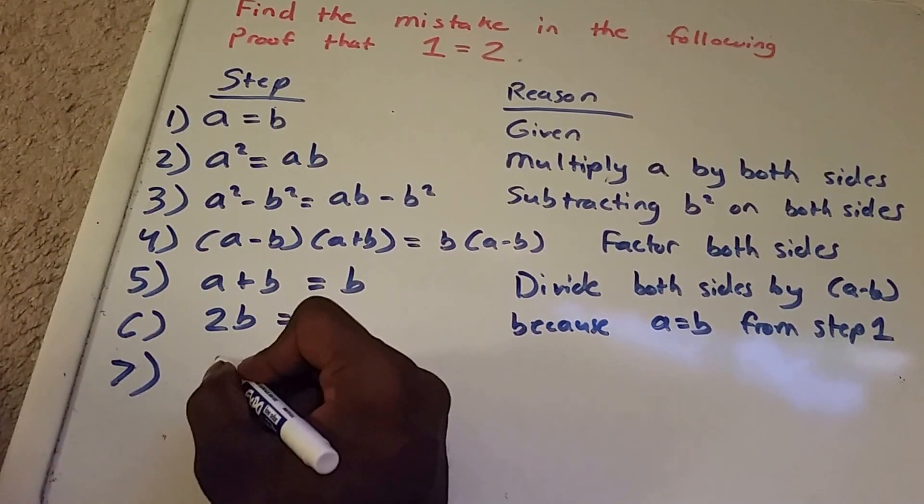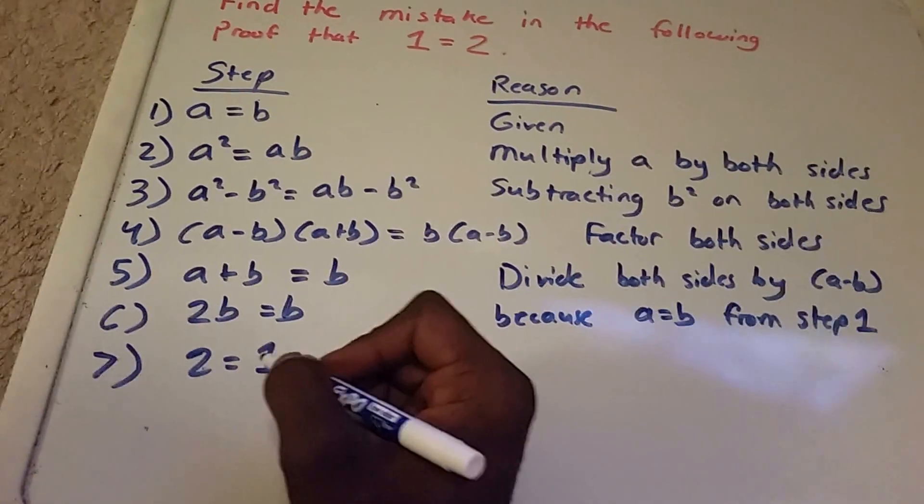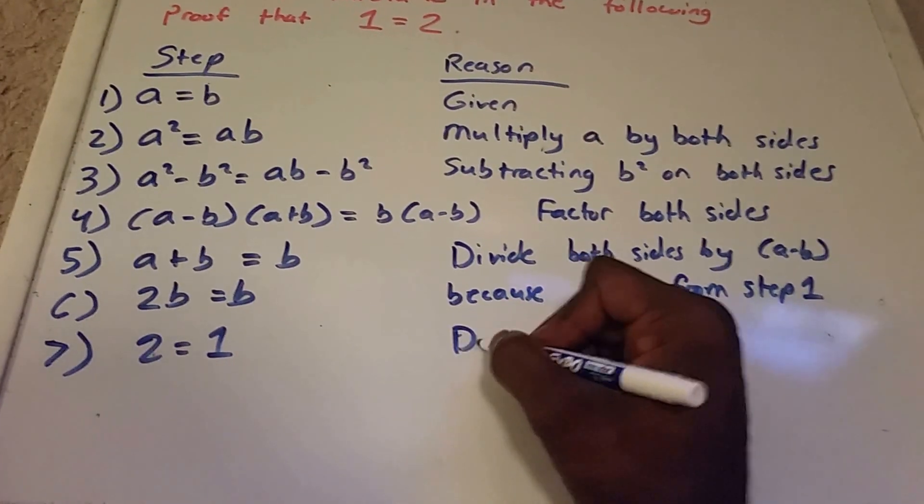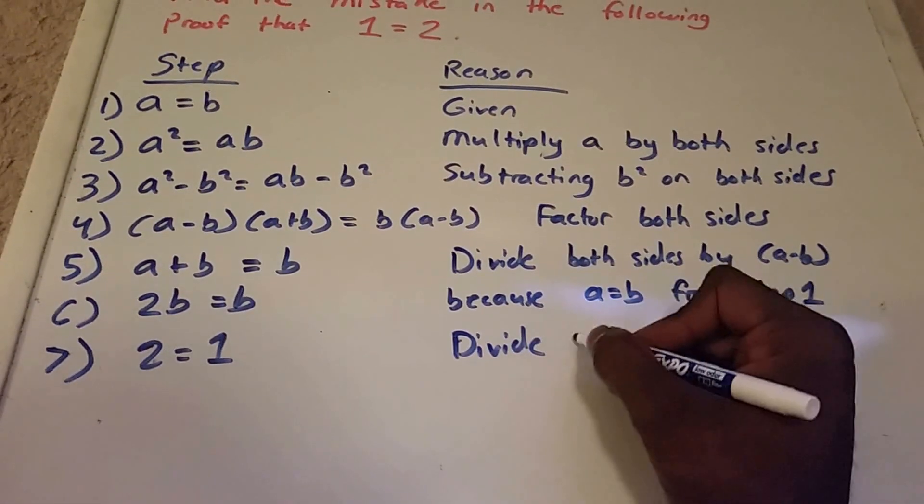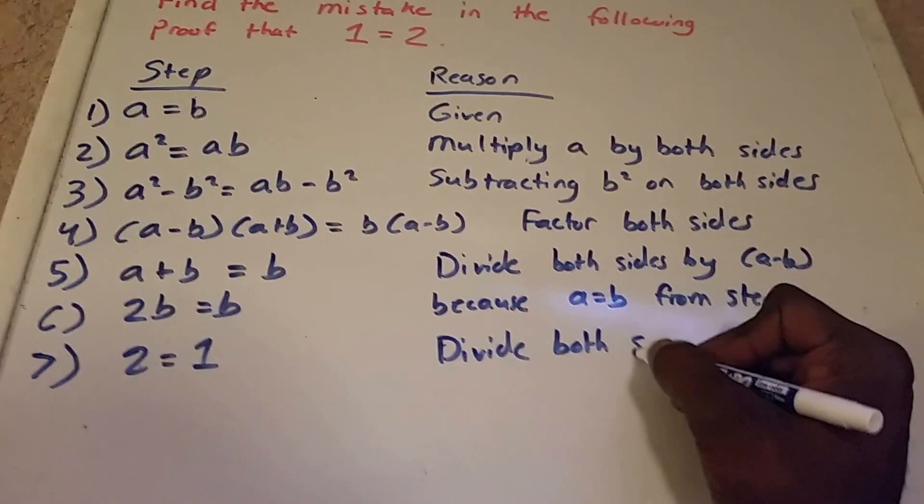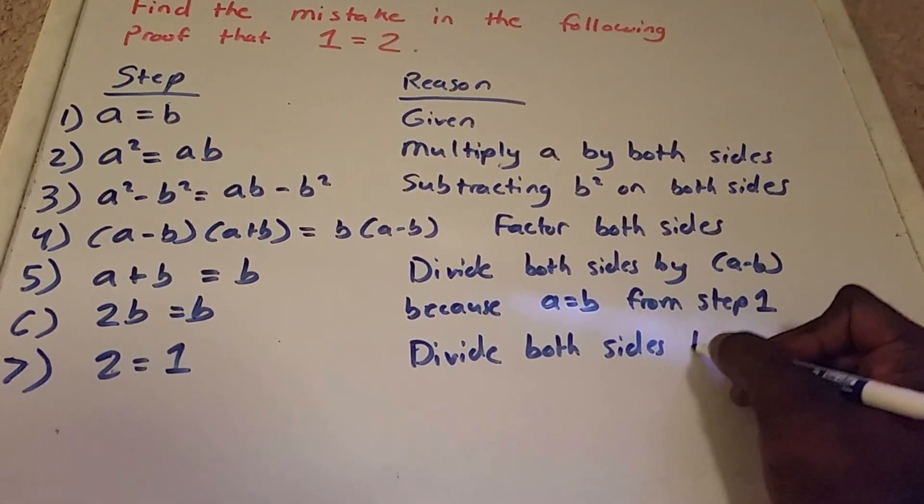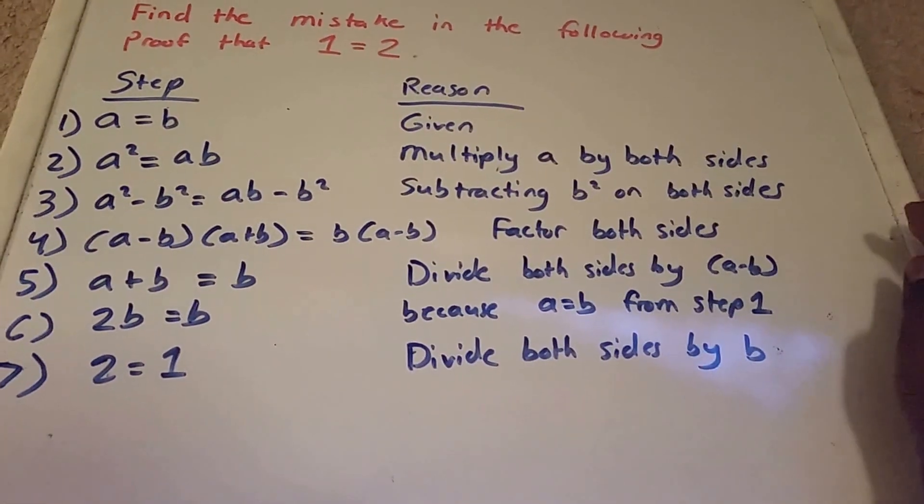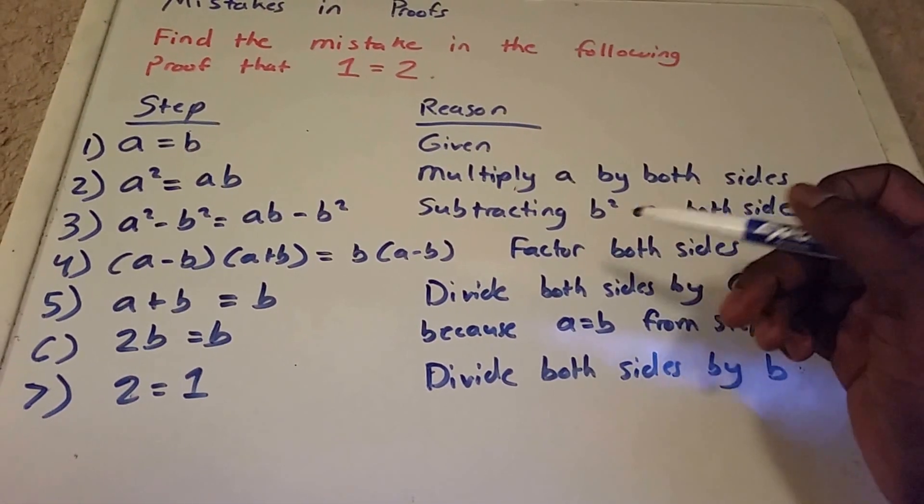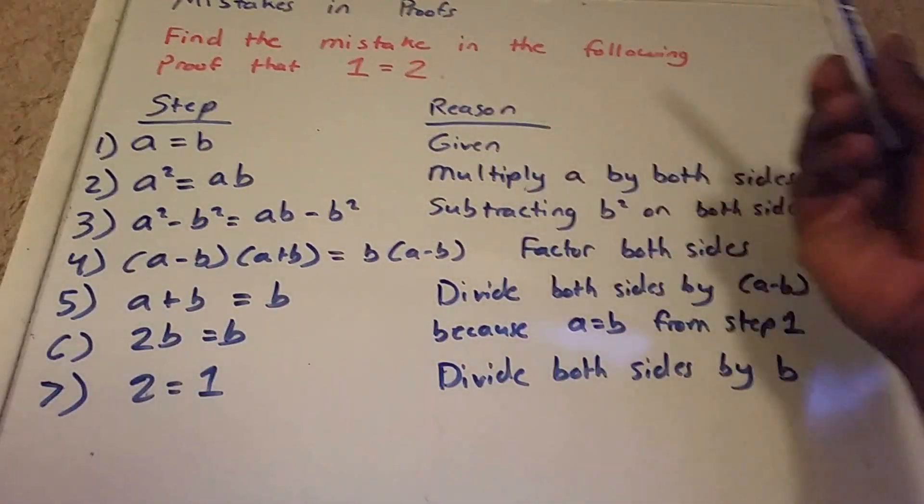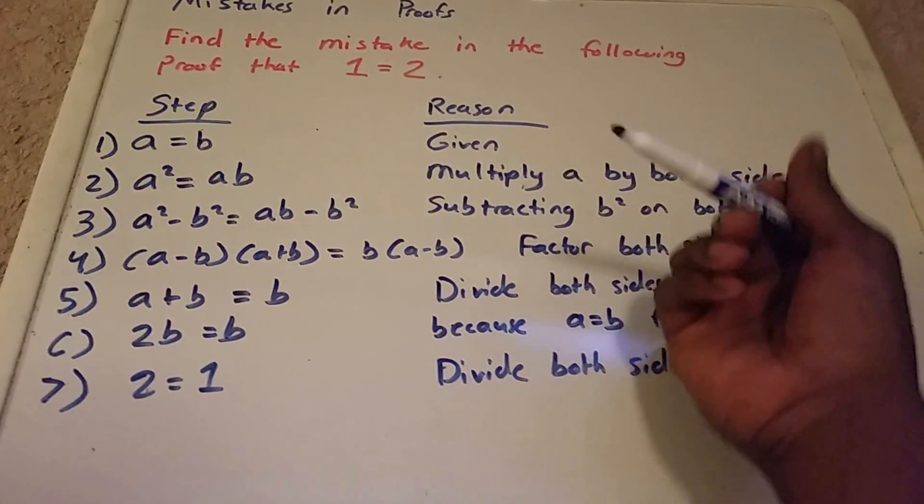And now we get 2 equals 1, and the reason why is because I divide both sides by b. So did anyone catch where I went wrong here on this proof?